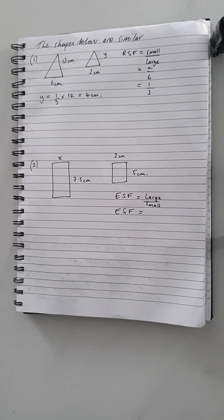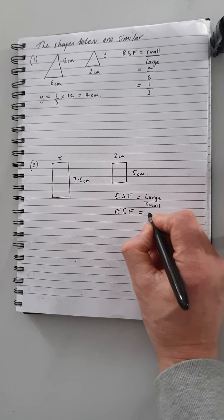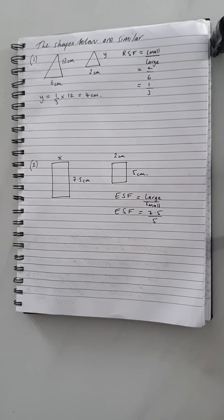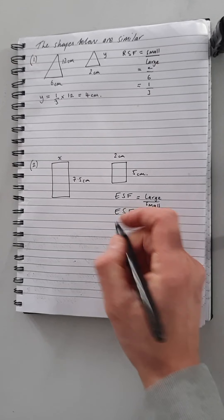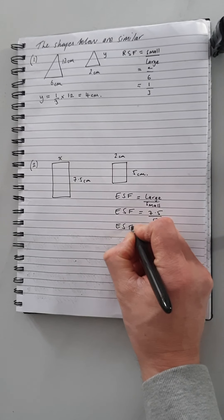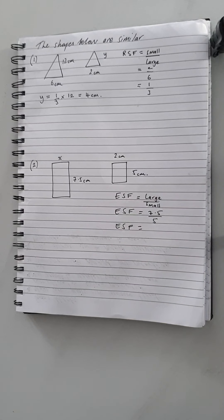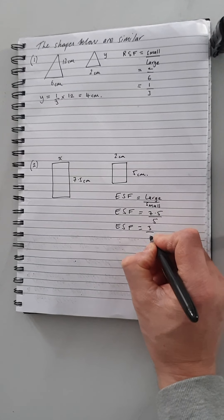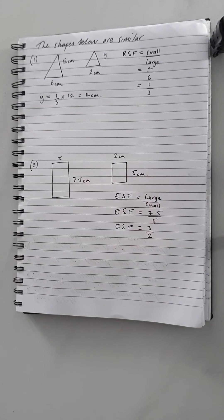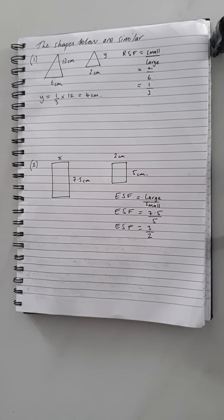The enlargement scale factor is large over small, so that's 7.5 divided by 5. You may or may not have a calculator, but we can simplify this fraction. Dividing both top and bottom by 2.5: 7.5 ÷ 2.5 = 3, and 5 ÷ 2.5 = 2. If you've got decimals and no calculator, dividing through removes them. So our ESF is 3/2 — I'm happy to keep it as a fraction rather than converting to a decimal.